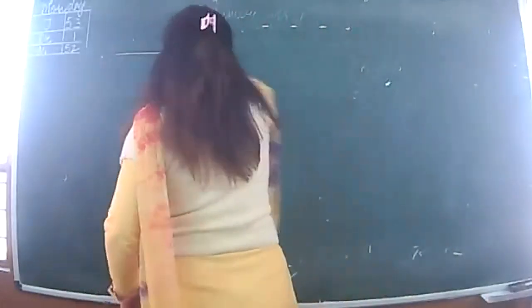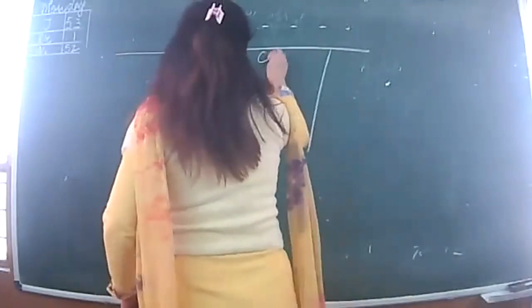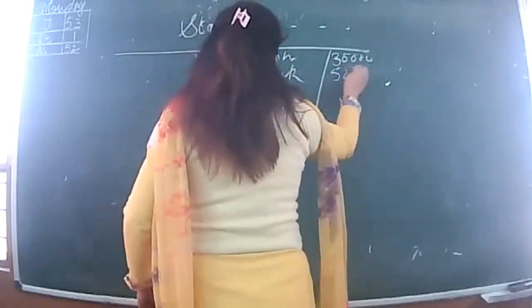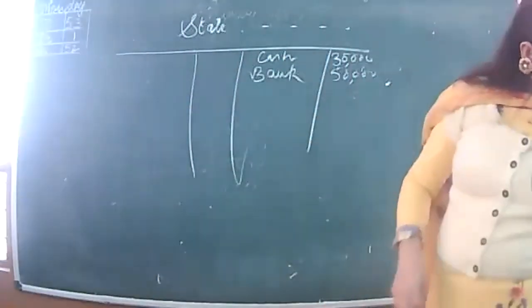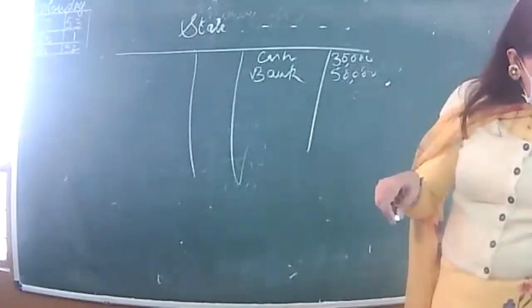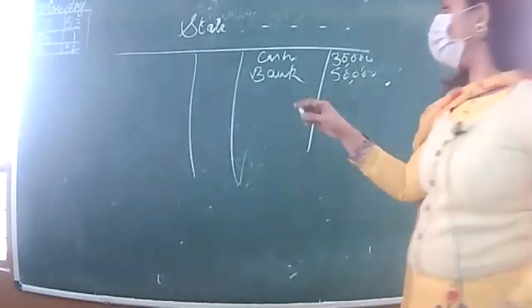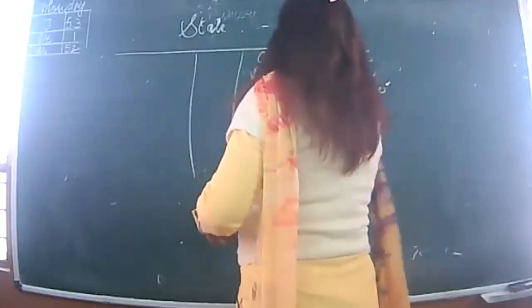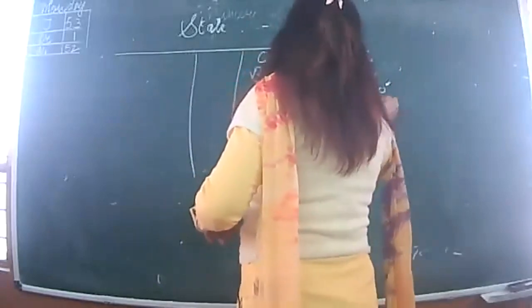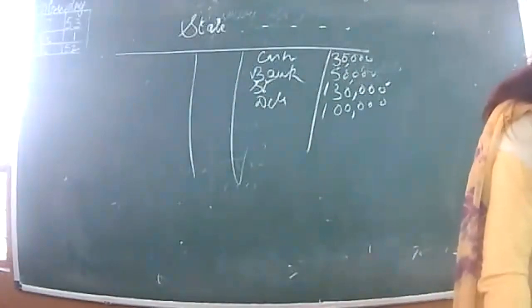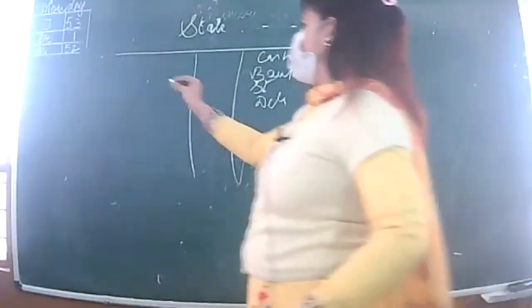Writing the closing statement of affairs for 30th September 2018 in abbreviation form. Cash: 30,000. Bank: 50,000. Stock decreased to 1,30,000 - the word 'to' means this is the new value. Debtors reduced by 20,000 - debtors were 1,20,000, now 1,00,000. Creditors remain same as 1st April: 1,20,000. Bills payable: no outstanding BP, so BP is removed.